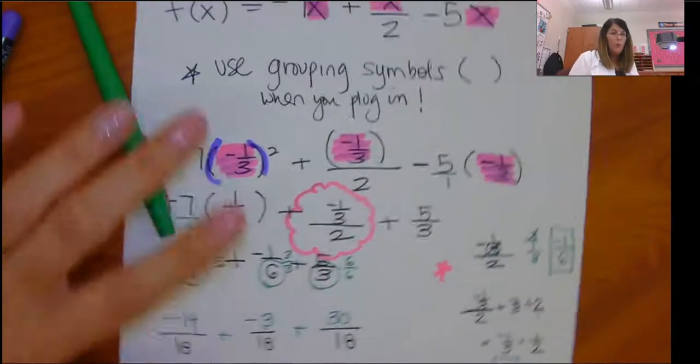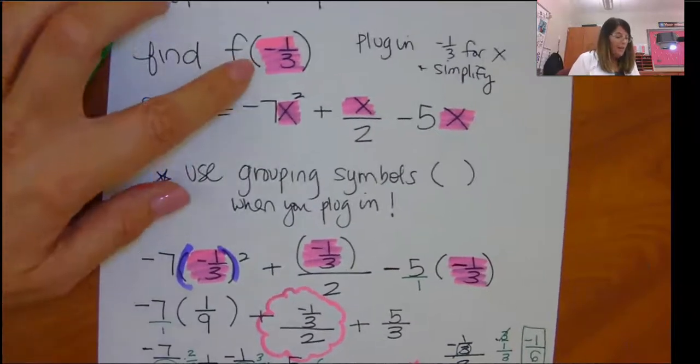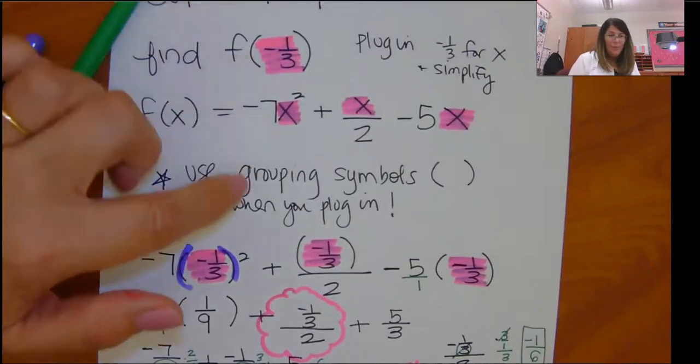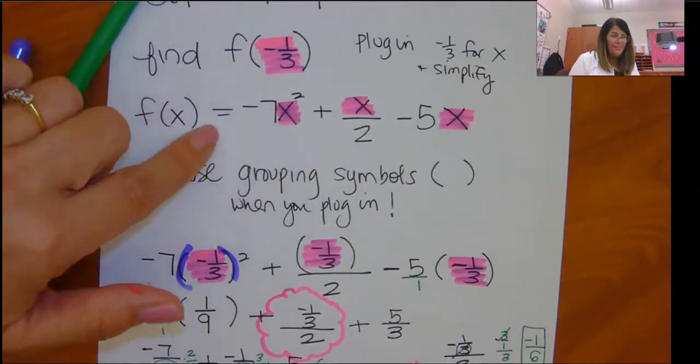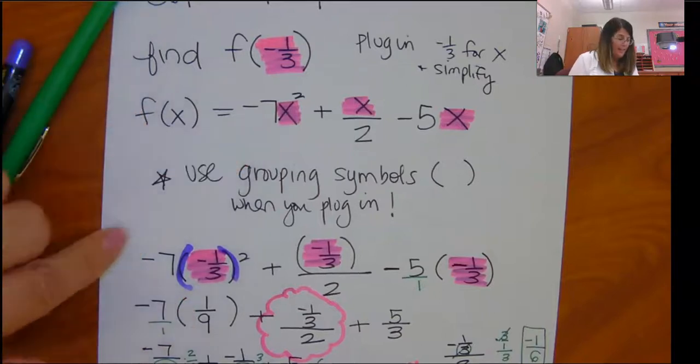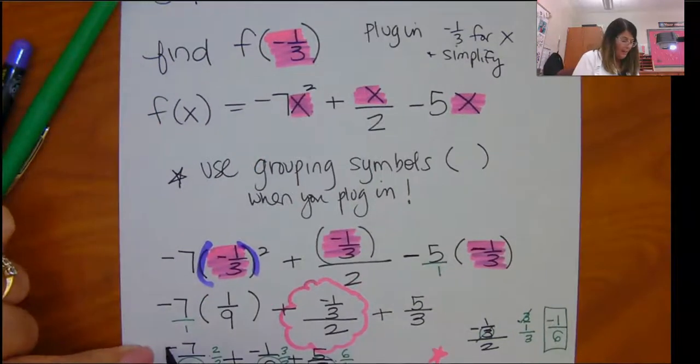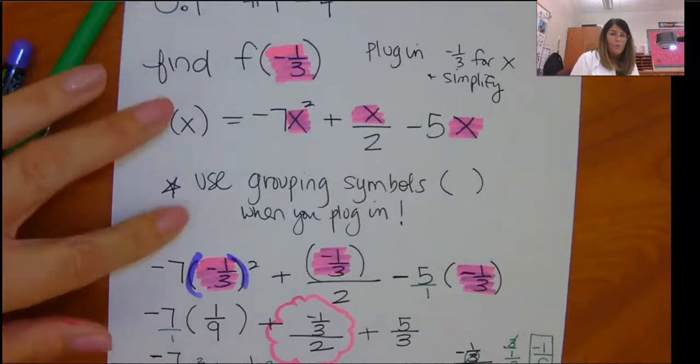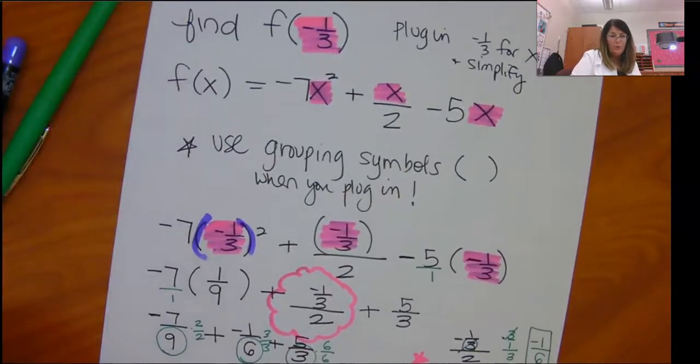And there we are. So what was the hard part here? Probably the negative when you squared it. And then this number, the coefficient, was also negative. When I got done, that turned out to be negative. So remember when you're plugging things in to use grouping symbols.